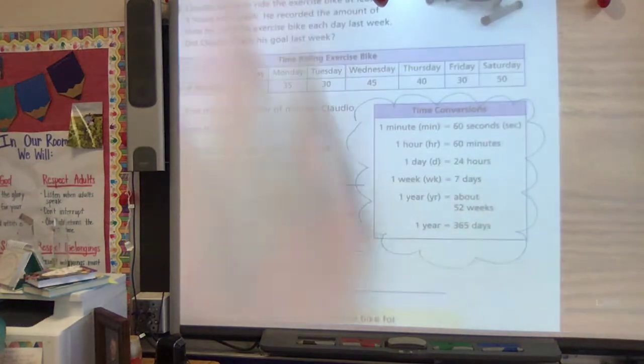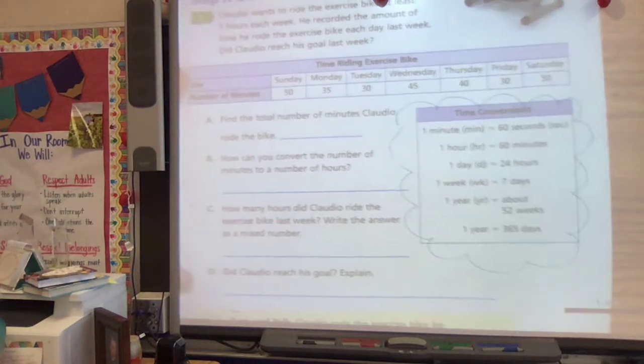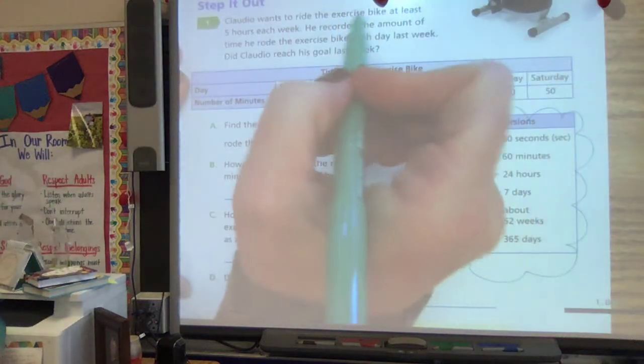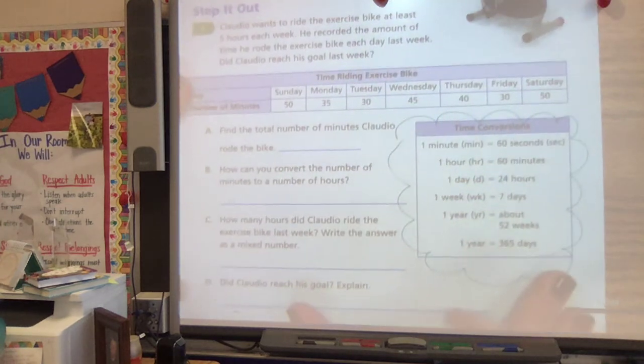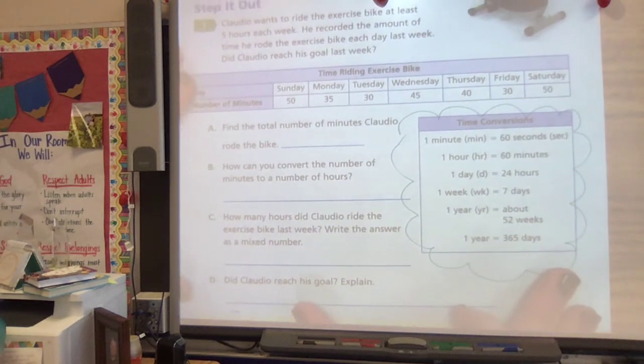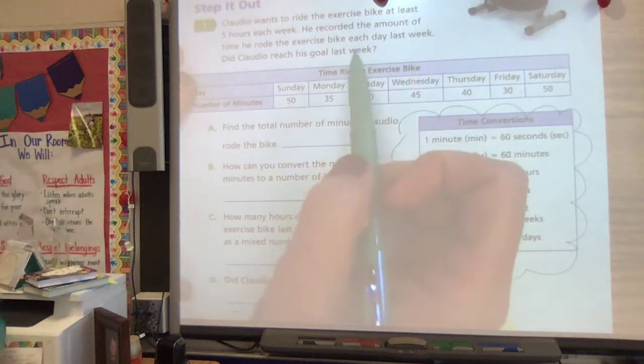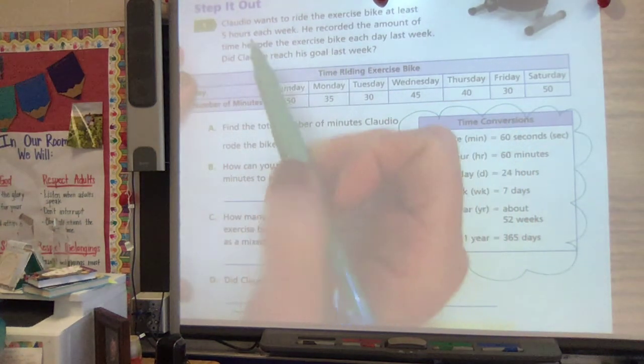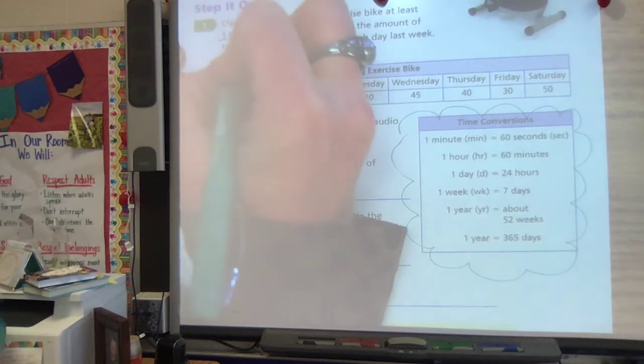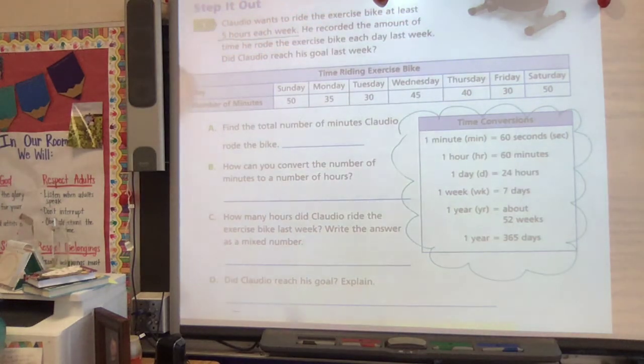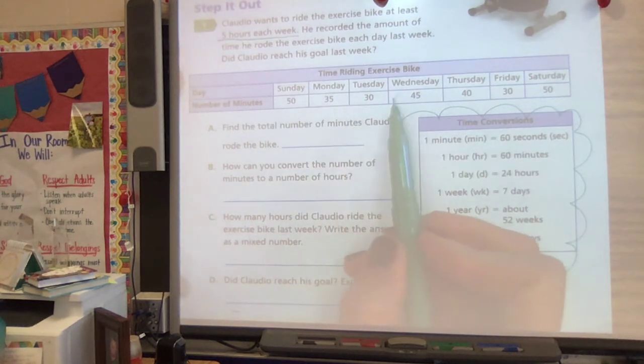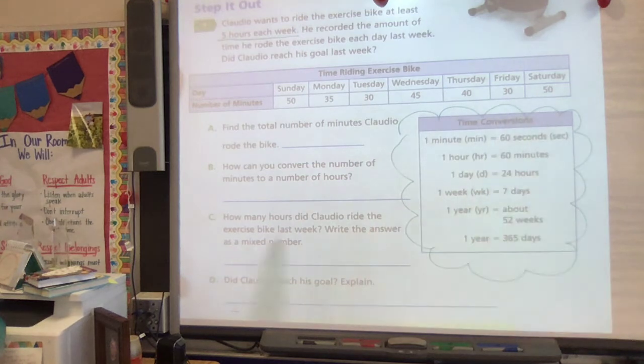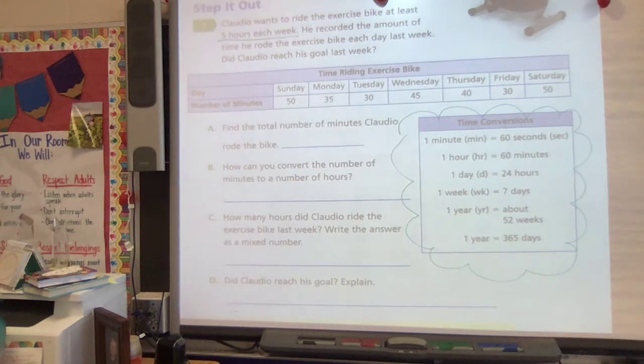So let's look at this first problem we have. It says, Claudio wants to ride the exercise bike at least five hours each week. He recorded the amount of time he rode the exercise bike each day last week. Did Claudio reach his goal? Because he wants to ride for five hours each week. But we see here that he listed his time as minutes: 50, 35, 30, 45, 40, 30, 50.